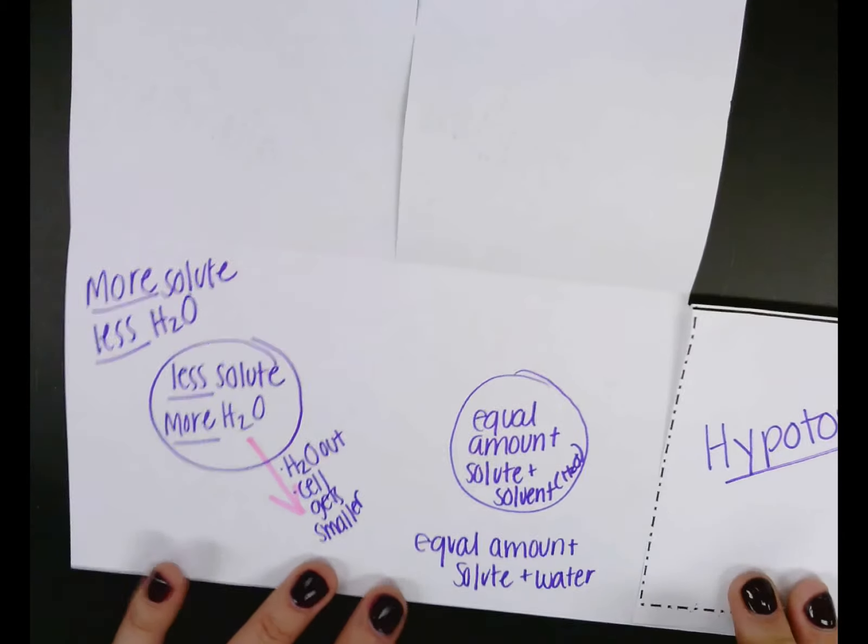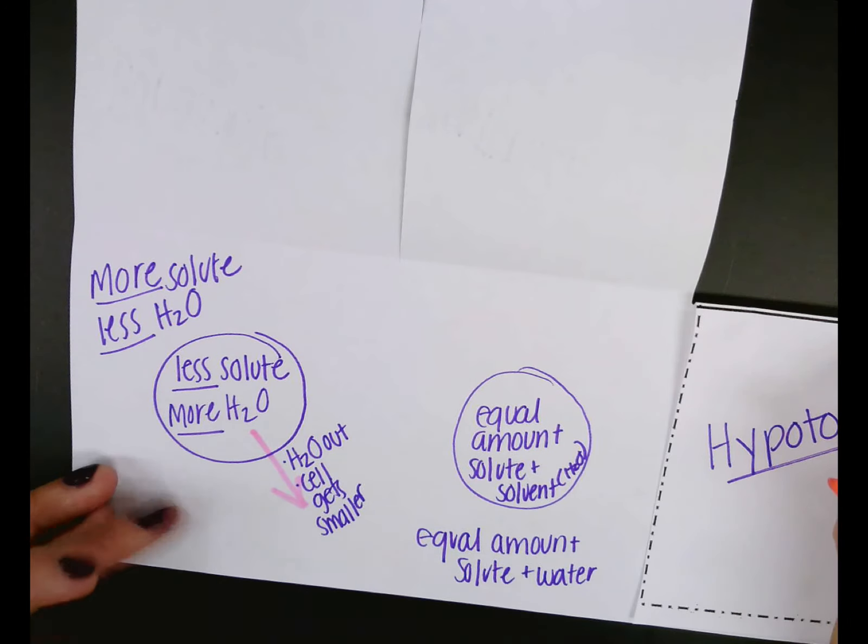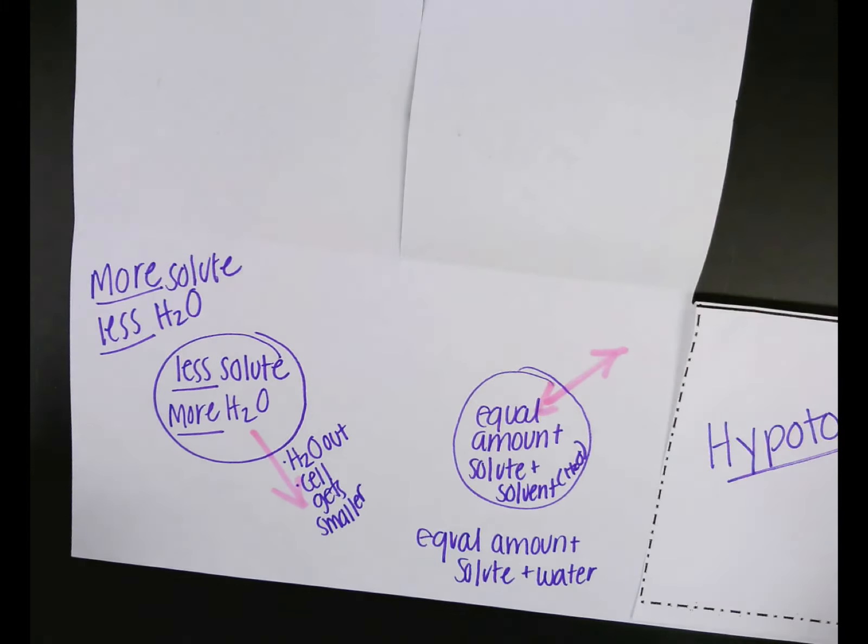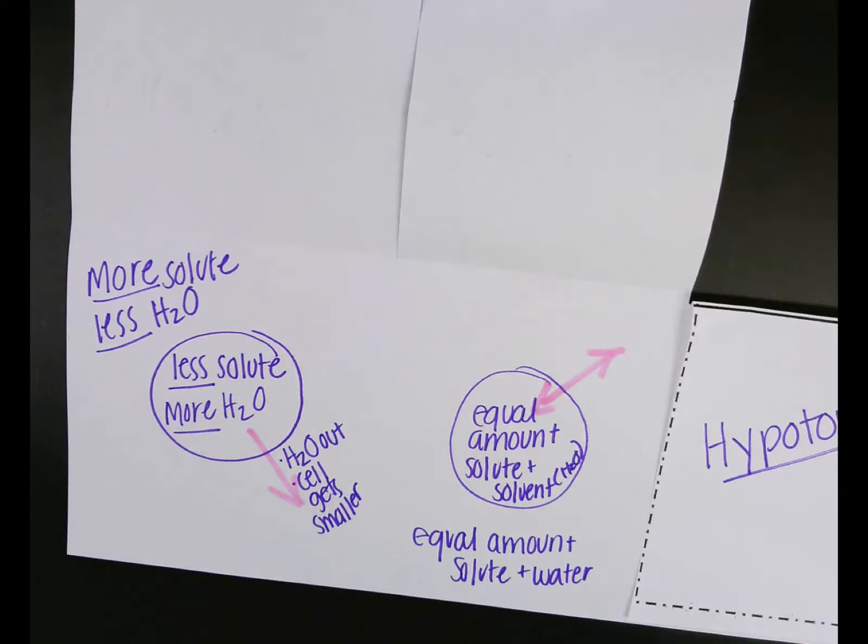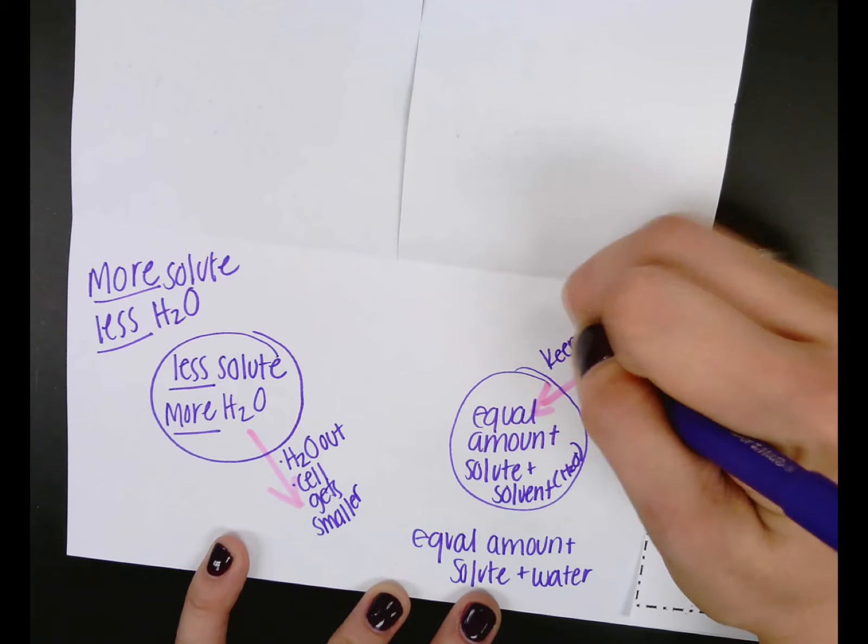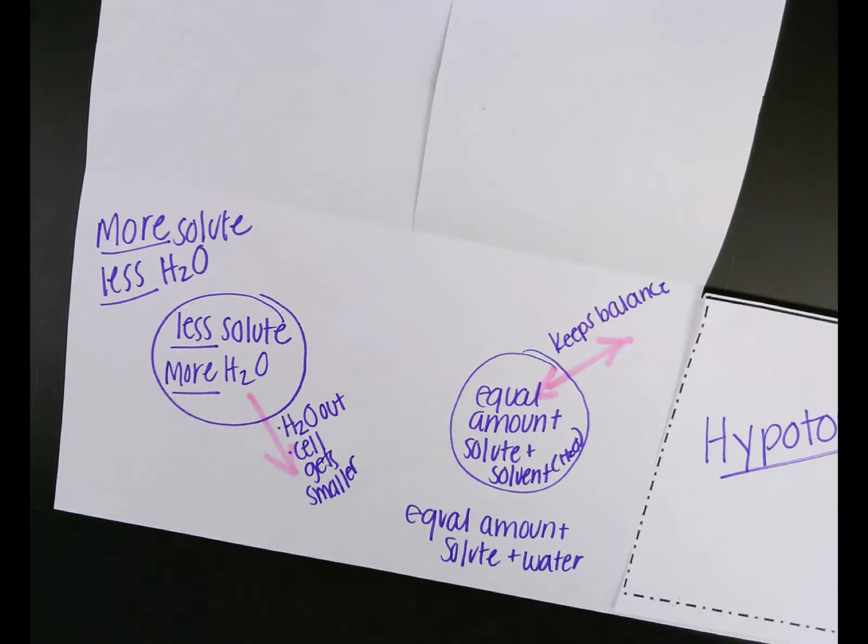So what's going to happen to this cell? Yeah, it's just going to stay balanced. Now, if it ever becomes imbalanced, it's going to go back and forth. So it keeps balance. What do we call that when a cell's at its perfect, stable, balanced point? Equilibrium or? Homeostasis. Homeostasis, exactly right.